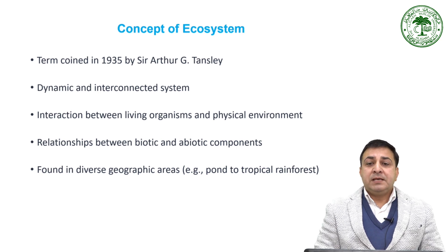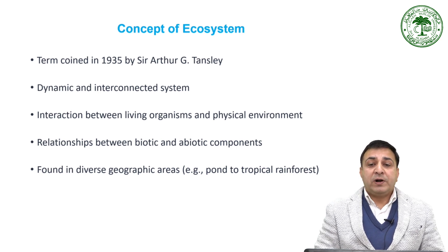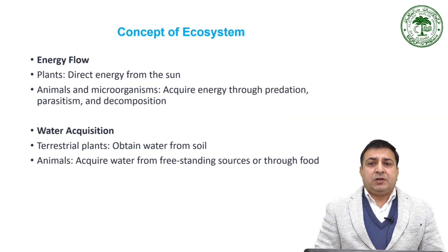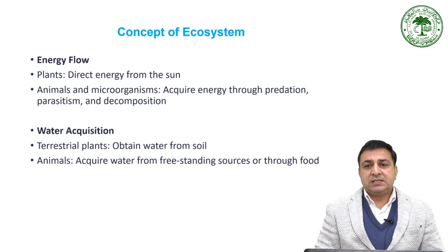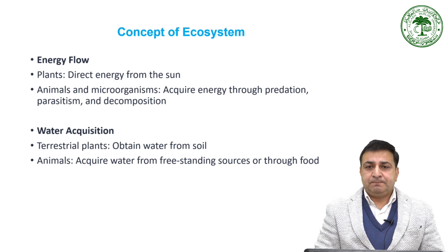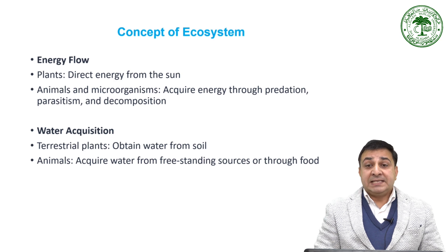Ecosystems can be as small as a pond or as vast as a tropical rainforest, but they all share fundamental principles. Plants drive energy directly from the sun, while animals and microorganisms acquire energy by consuming other organisms through processes like predation, parasitism, and decomposition. Terrestrial plants primarily obtain water from the soil, whereas animals acquire it from either free-standing water sources or through their food.